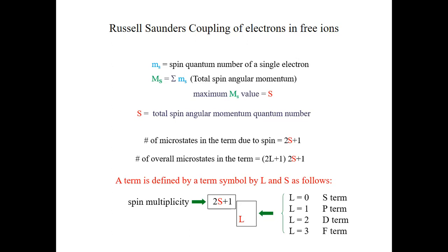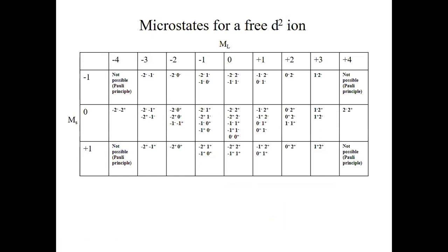Now, how can we find the number of microstates and the terms for a particular electron configuration? Let us look at the microstates of the free d² ion first. The d² ion is an ion that has only two d electrons, and the free d² ion is one that is not complexed in any way — we are only looking at the naked d² ion.